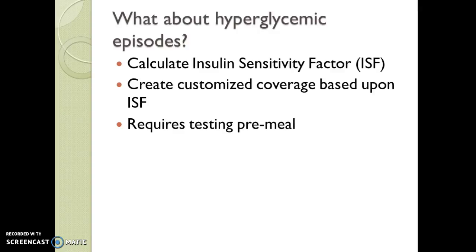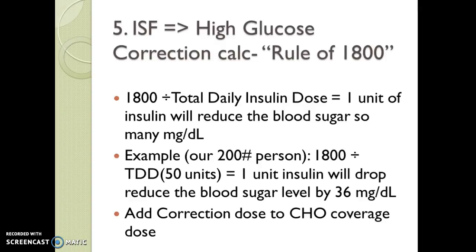To cover high blood sugar, we use an insulin sensitivity factor calculated with the rule of 1800. We take 1,800 and divide it by the total daily dose, and it tells us how many milligrams per deciliter one unit of insulin will reduce blood sugar. For our 200-pound person, 1,800 divided by 50 means one unit of insulin will drop blood sugar by about 36 mg/dL. So if they were 72 above their target of 120 — say a pre-meal blood sugar of 200 — we would need a couple of units just to cover that high sugar, in addition to their carbohydrate coverage dose. We add those two together.